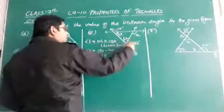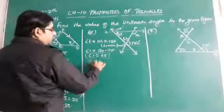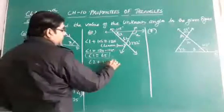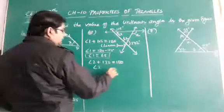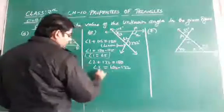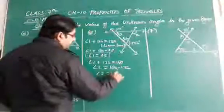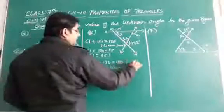This angle 2 and this 132 also forms a linear pair. So, angle 2 plus 132 equal to 180 degree. Transpose 132 to this side. 180 minus 132. So, angle 2 is equal to 48 degree.